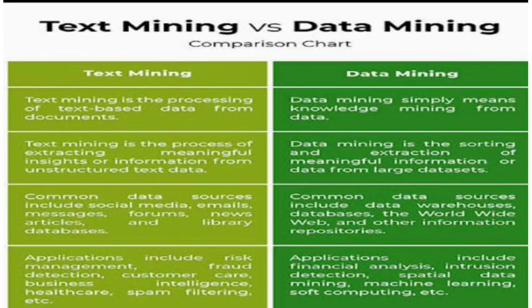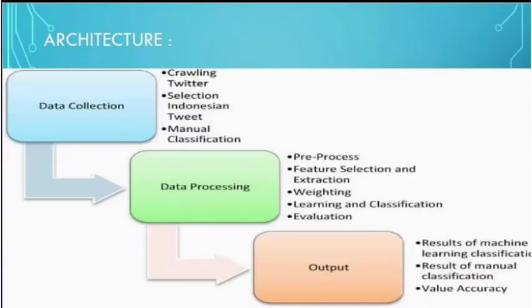Common data sources for data mining include data warehouses, databases, the World Wide Web, and other information. The architecture of text mining involves data collection through crawling, selection, and manual processes, followed by data processing, pre-processing, and feature selection and extraction.